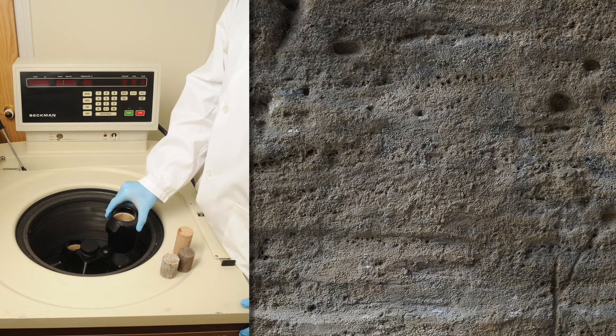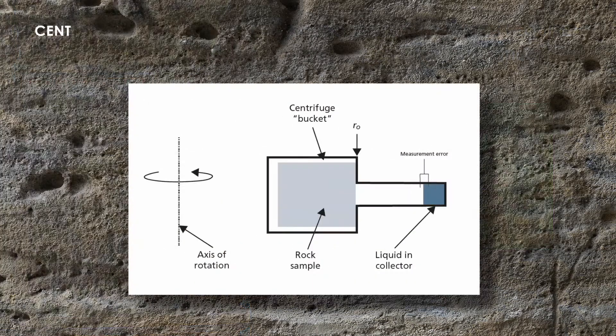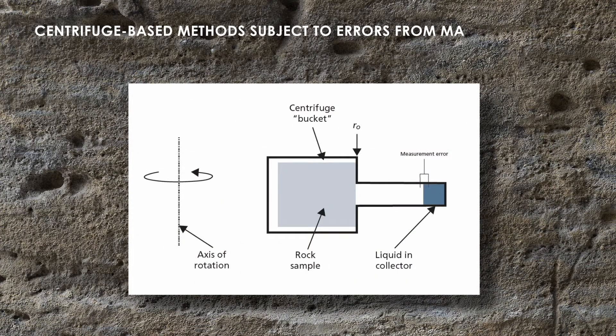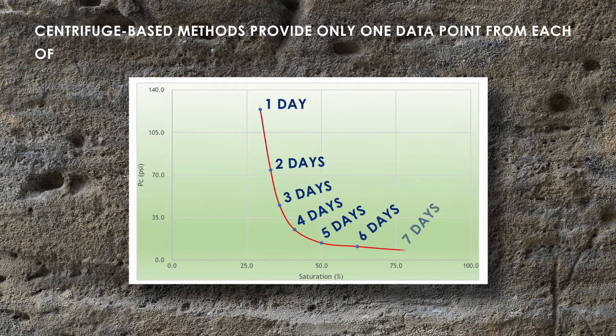Centrifuge based methods are faster but they require an estimate of inlet saturation, are subject to errors from manual readings of expelled fluid in the collector, and provide only one data point from each of seven or eight spin speeds, although each step is faster than the porous plate method.